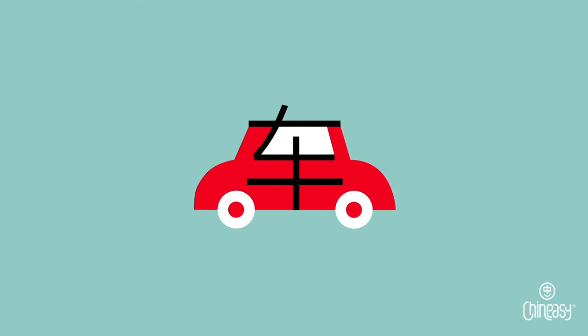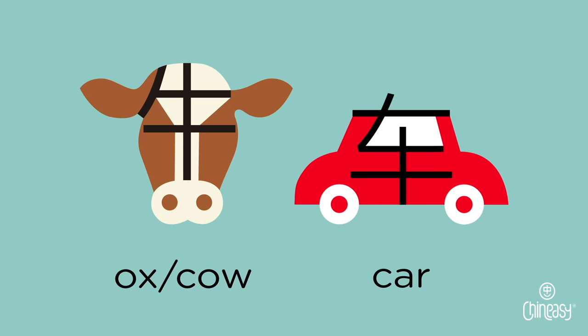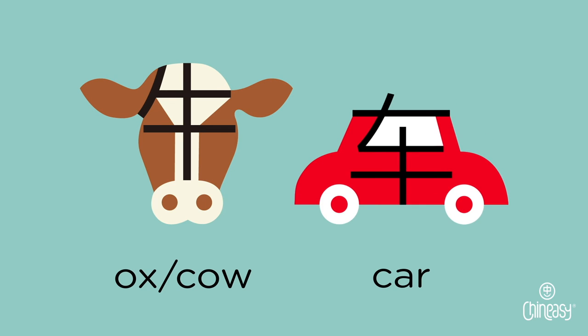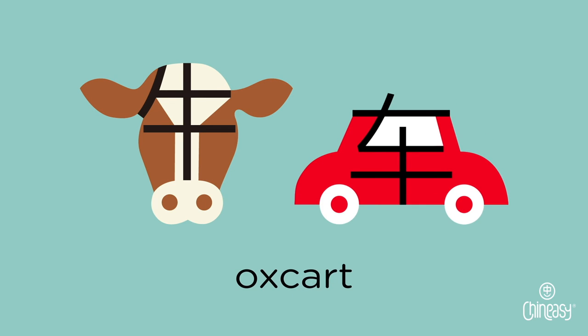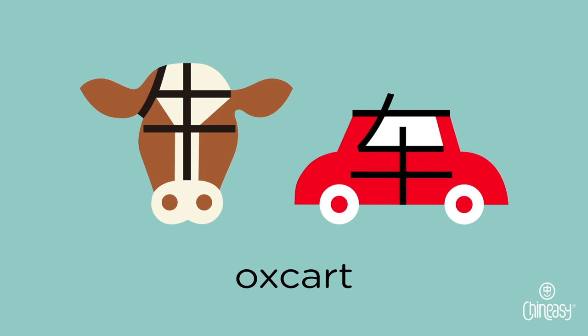Add ox, 牛, in front of car, 车, and we have an ox cart — the cart powered by cattle. Traditionally used by farmers for work in the field.